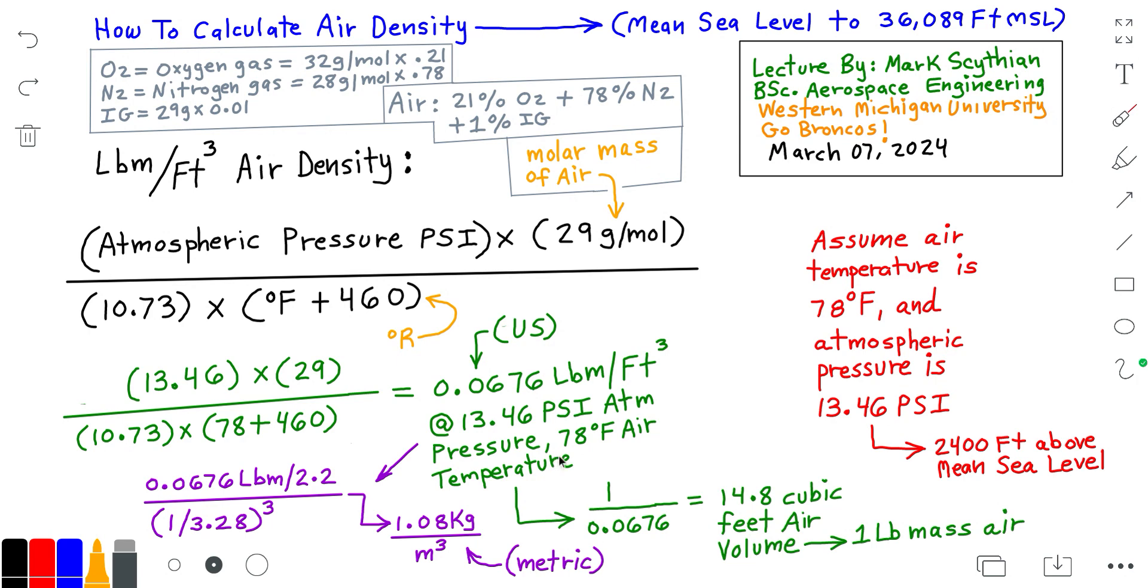If we take the inverse of the air density in pounds per cubic foot, this translates to 14.8 cubic feet of air volume will equal 1 pound of mass air.